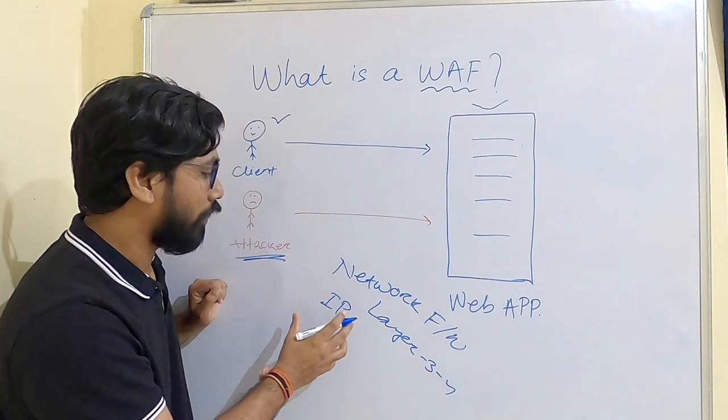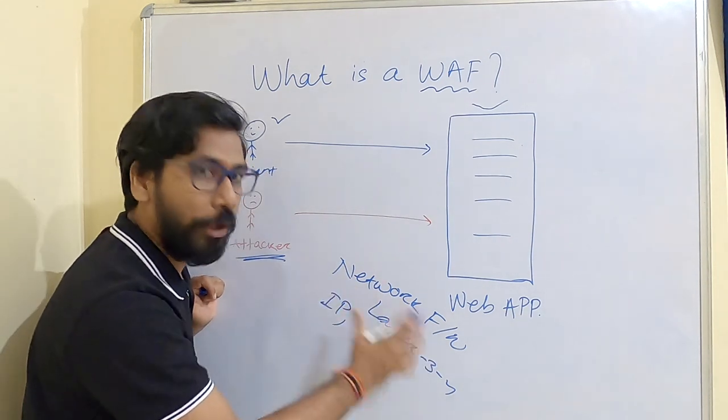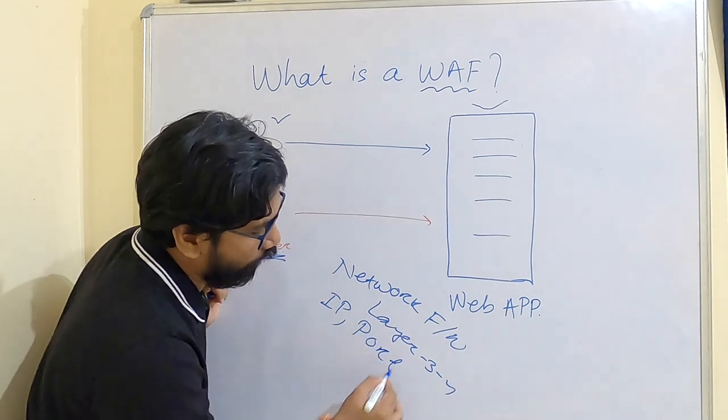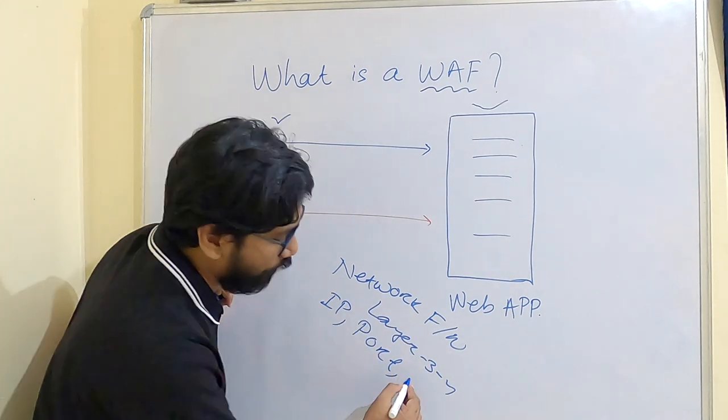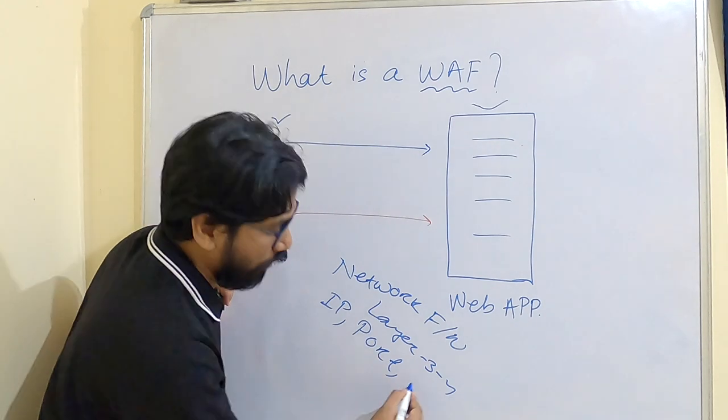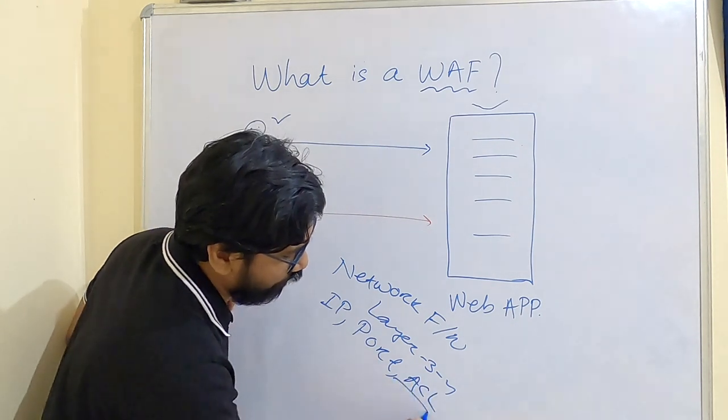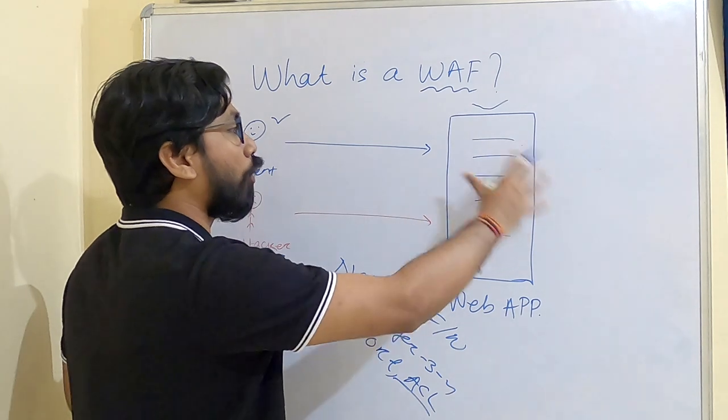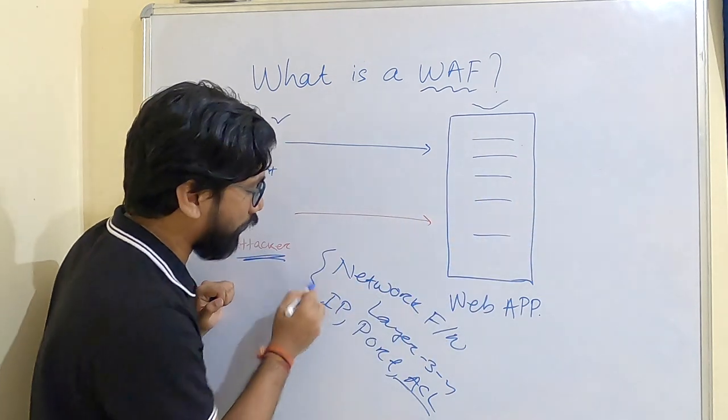We can restrict particular ports and create access control lists like ACLs, so that our web application is protected by this network firewall.